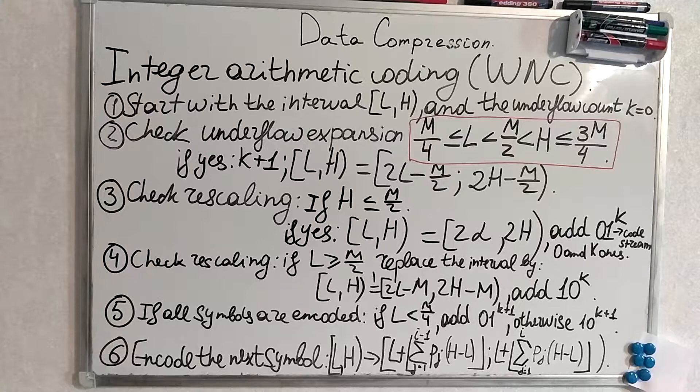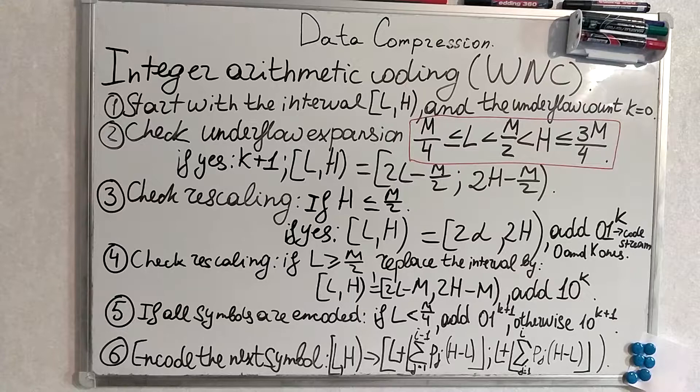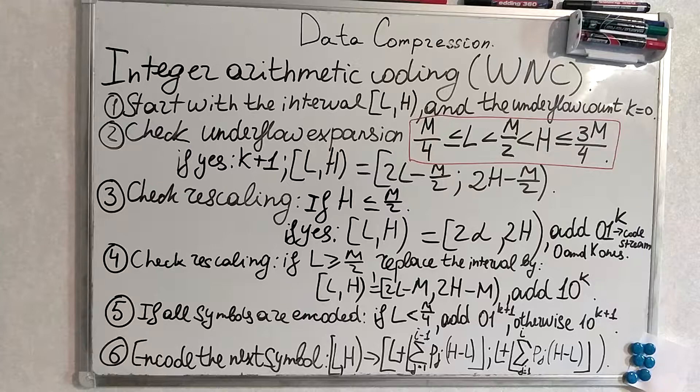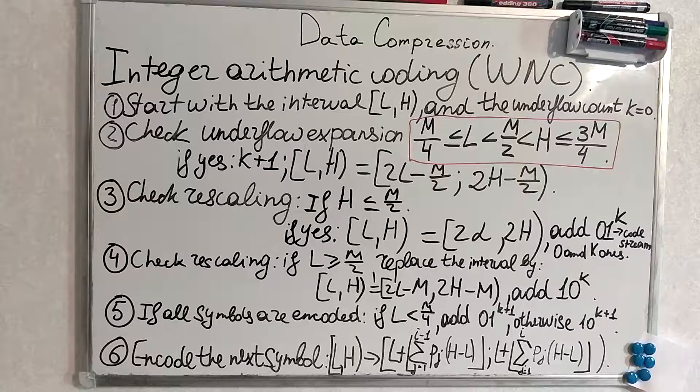We also check the other side of rescaling. It's when the lower threshold of the interval is bigger than m divided by 2. We replace the interval by the following formula. If all the symbols are encoded, we check L and add corresponding things.